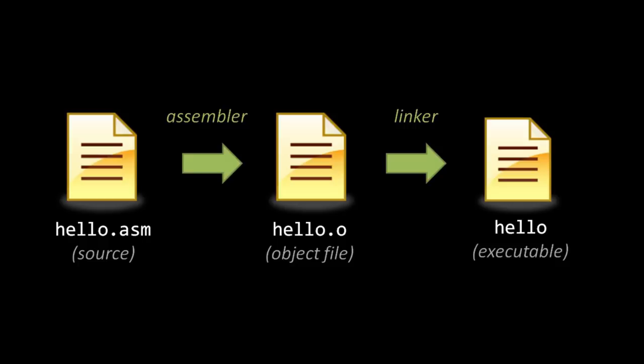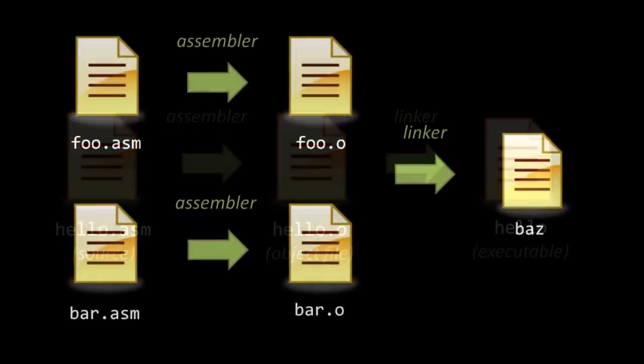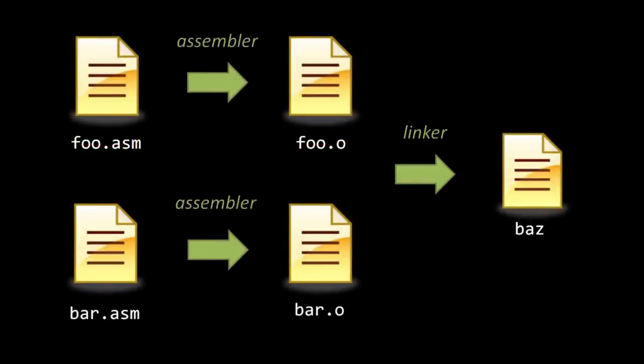The reason for this extra step is that, in practice, we usually write the code of a program in multiple source files, files which we may wish to assemble independently. For example, if I've written my code in two files, foo.asm and bar.asm, and I want to produce one single executable file — here called baz — I first run each source file through the assembler independently, producing an object file for each. And then those two object files are run together through the linker, producing the executable.